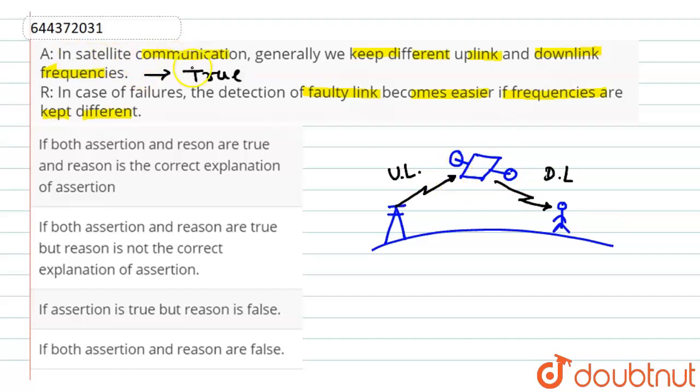So here the statement of assertion is true. That is, in a satellite communication, generally we keep different uplink and downlink frequency, and the reason statement is also true and it correctly explains the statement of assertion. Therefore, option A will be the correct answer. Thank you.